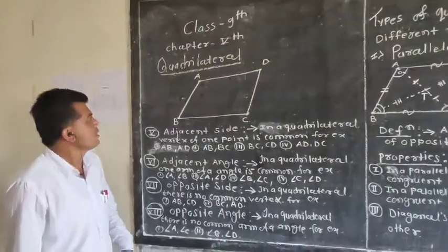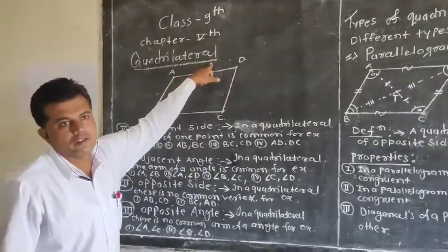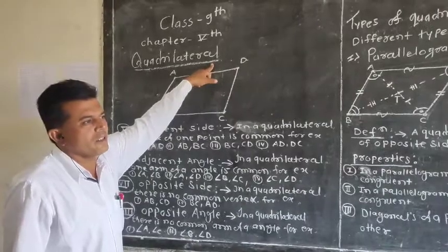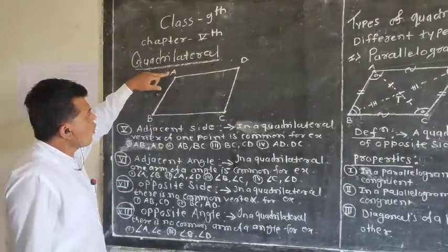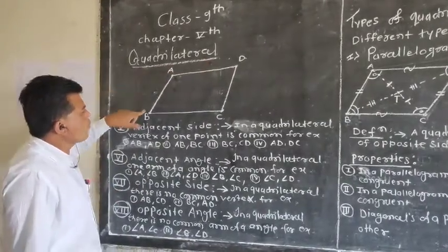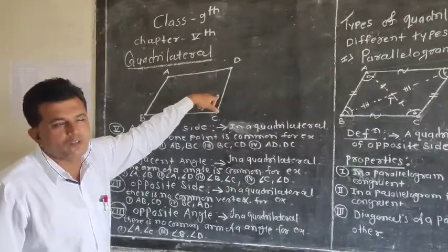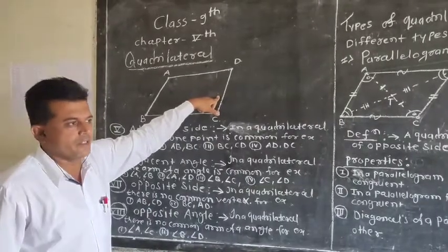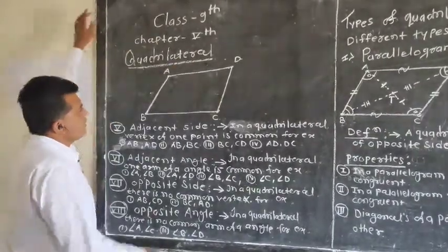Last session, you learned about the quadrilateral. A quadrilateral is formed when four non-collinear points are joined together.